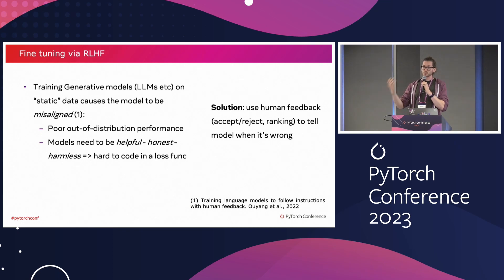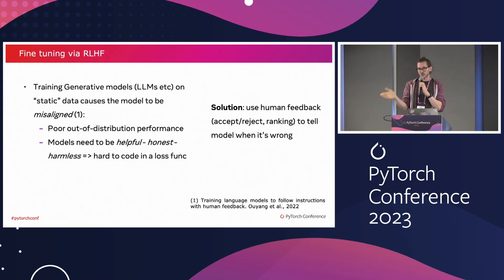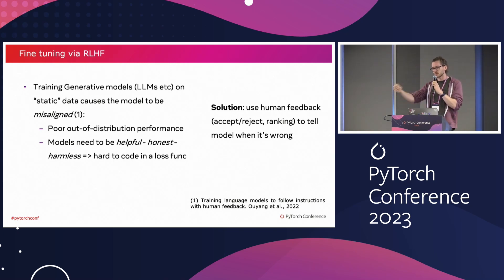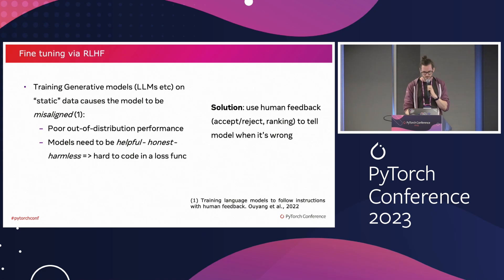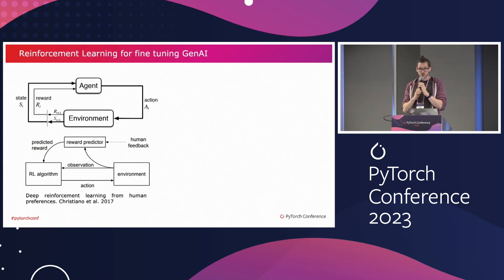You look at the output of the model and you say, oh, this is good, or oh, this is bad. And just by telling your model when it's good and when it's bad, you're going to be able to fine-tune it and tell your model how to do better. Reinforcement learning is a very adequate technique to do that.